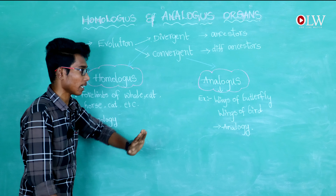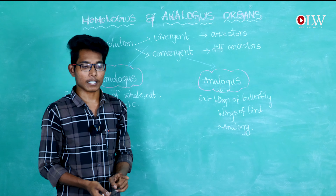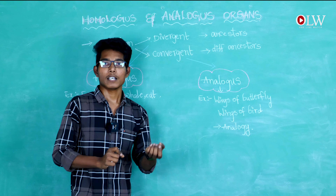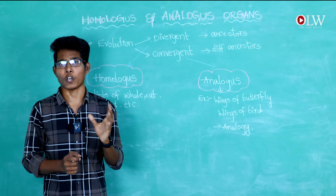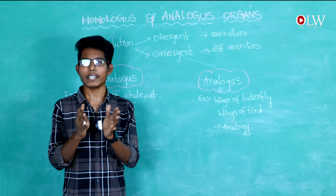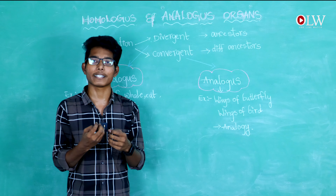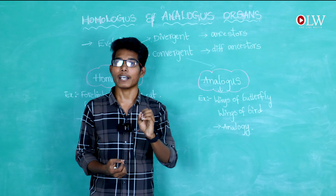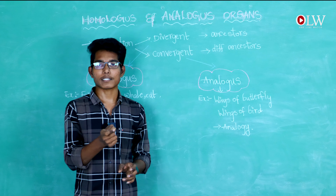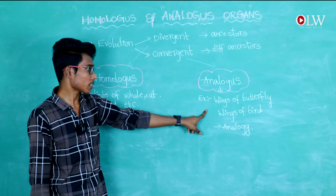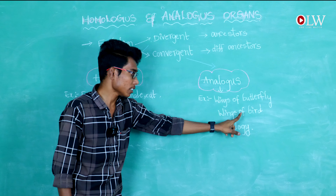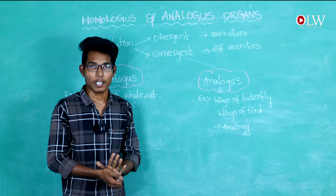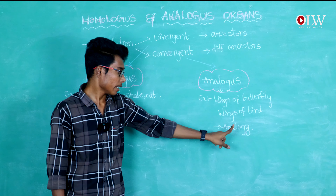Analogous organs are those in which the organisms have dissimilar origin and structure but perform the same function. The structures are designed differently across organisms. The best examples of analogous organs are the wings of a butterfly and the wings of a bird. The study of analogous organs is known as analogy.